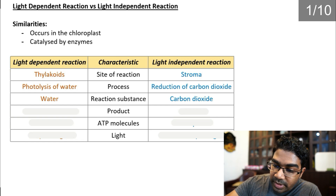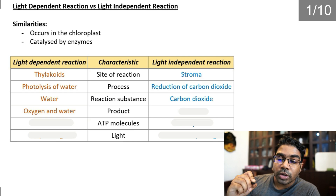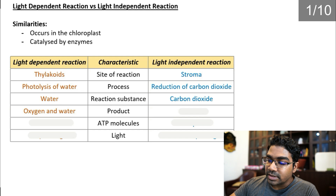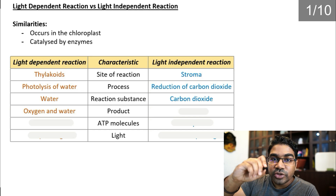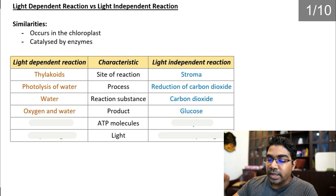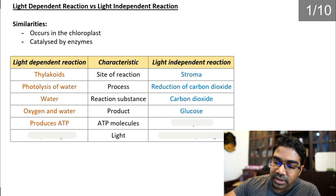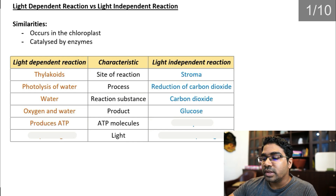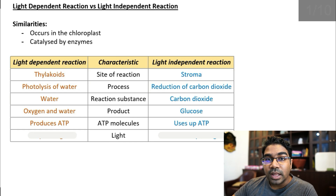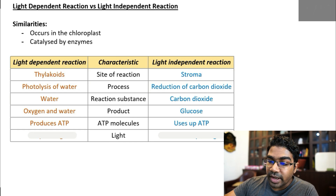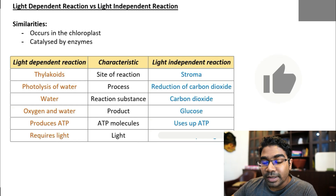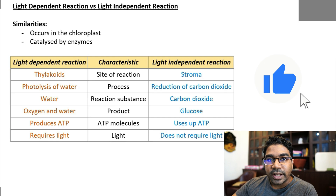The product for the light dependent reaction is oxygen and water, whereas the product for the light independent reaction is glucose. ATP molecules are produced in the light dependent reaction, whereas ATP molecules are used up in the light independent reaction. Regarding the requirement of light: light dependent requires light, light independent does not.